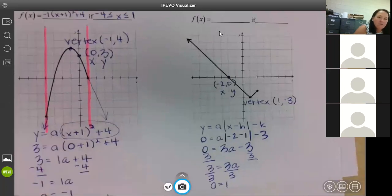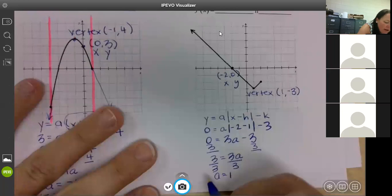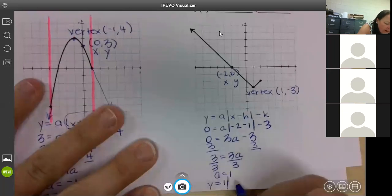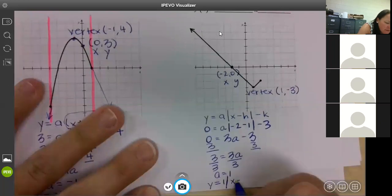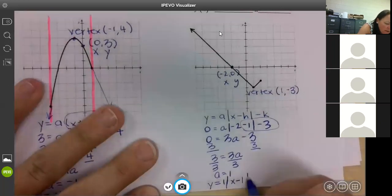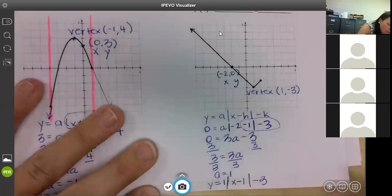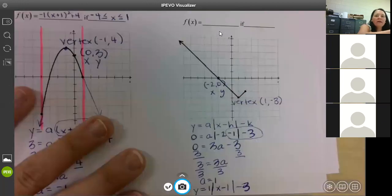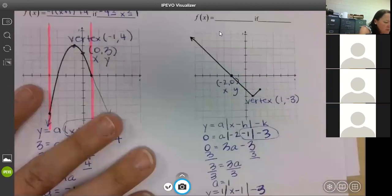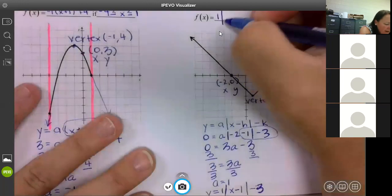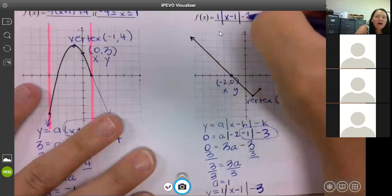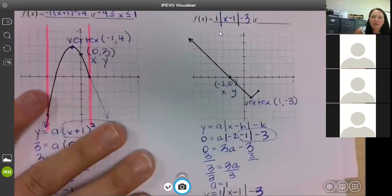Try to get that all up here as well. So your equation is y equals one times the absolute value of x. Keep the ending. Minus one minus three. Sorry, that three looks like crap. I'm going to transfer that back up to the top where it says f of x. One absolute value x minus one minus three. You don't have to put the one in front if you don't want to, but I want you to know where it came from.